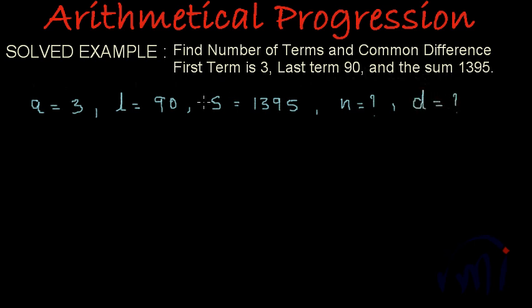We are provided with three parameters and we have to find two parameters which is number of terms and the common difference.